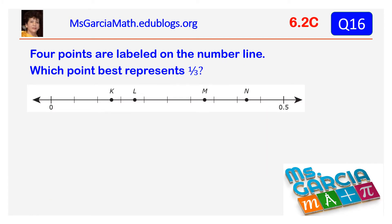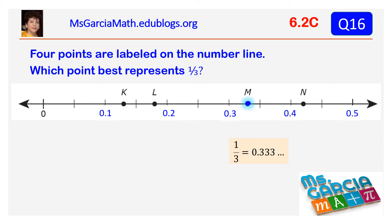Four points are labeled on the number line. Which point best represents one-third? One-third as a decimal is 0.333. One-third is a repeating decimal, which means it has no end point. The answer is M.